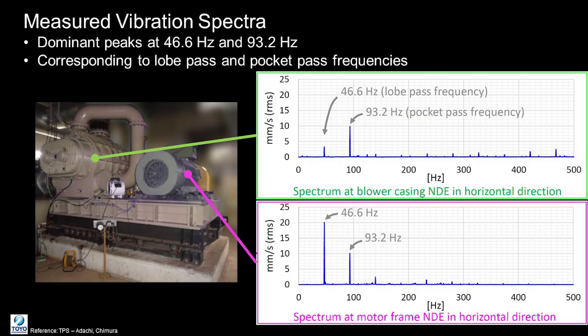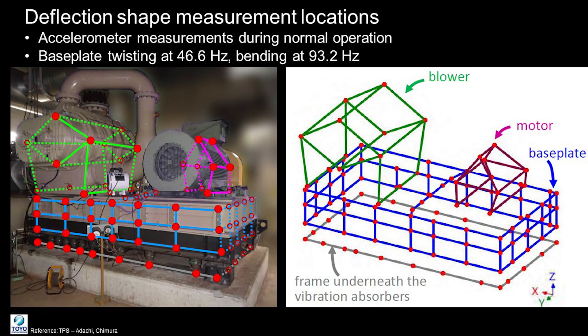Vibration measurements revealed dominant peaks at both 46 Hz and 93 Hz across the equipment. These peaks corresponded directly to the lobe pass and pocket pass frequencies, indicating that these were likely contributors to the system's vibration issues.